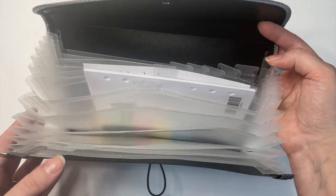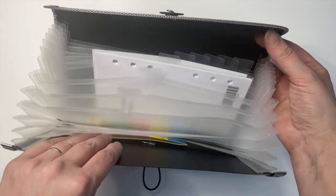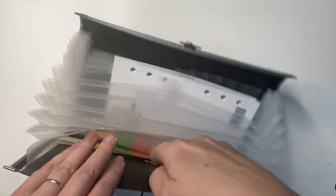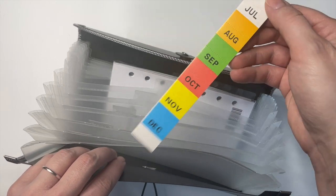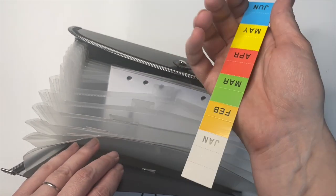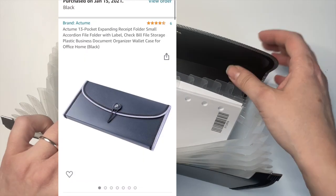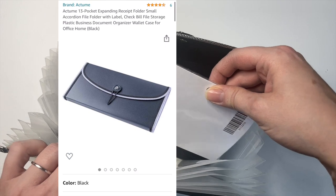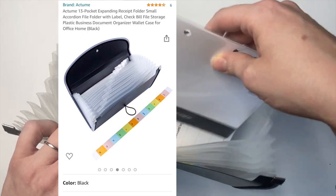There's 12 different sections. So it would be perfect to label one for each month and then to use this to store your used planner pages for each month. It does come with labels for each month.